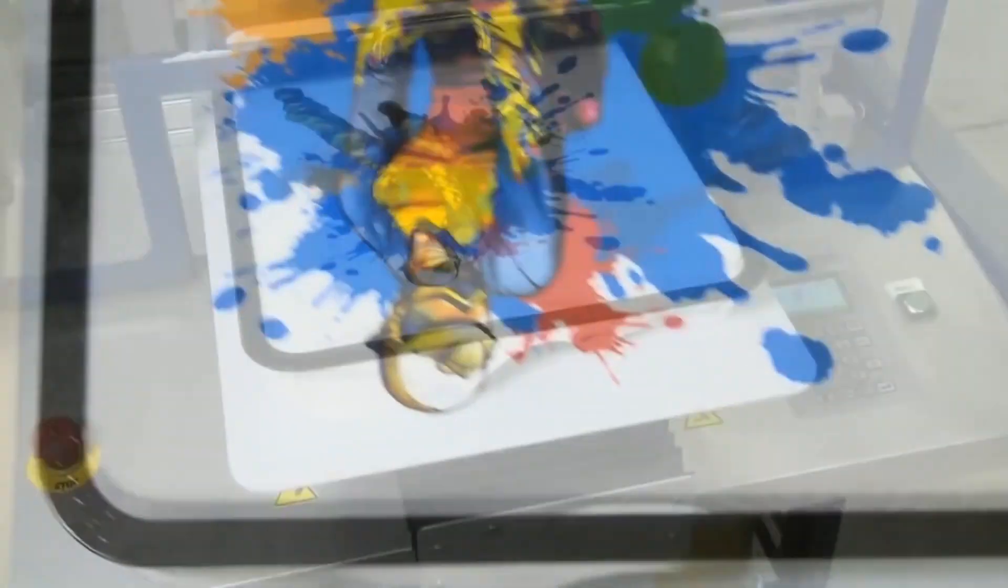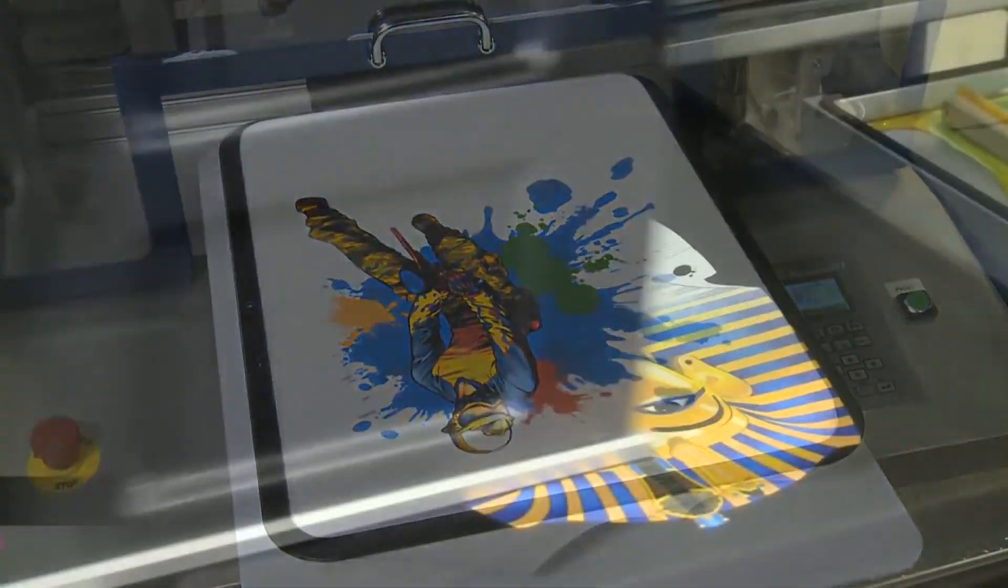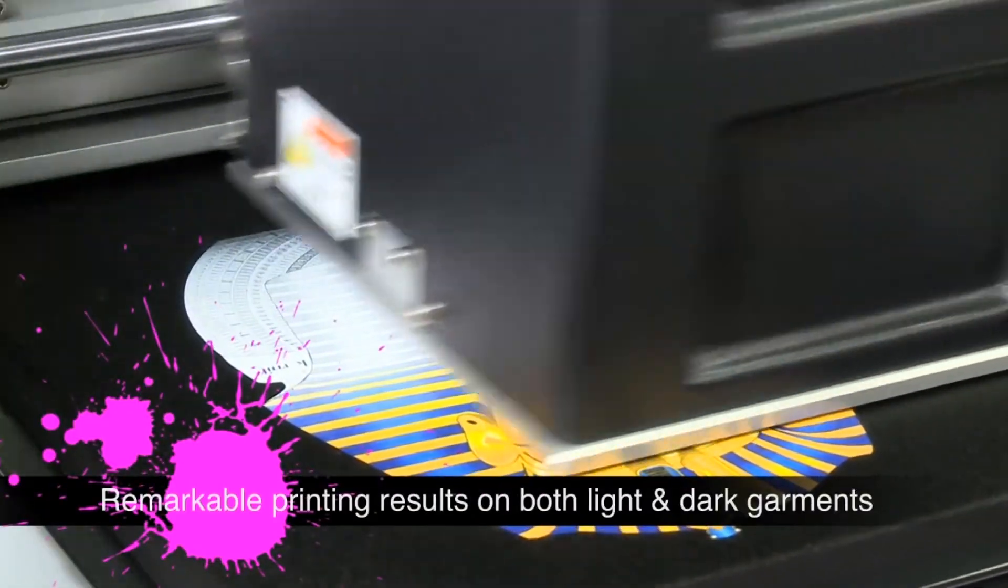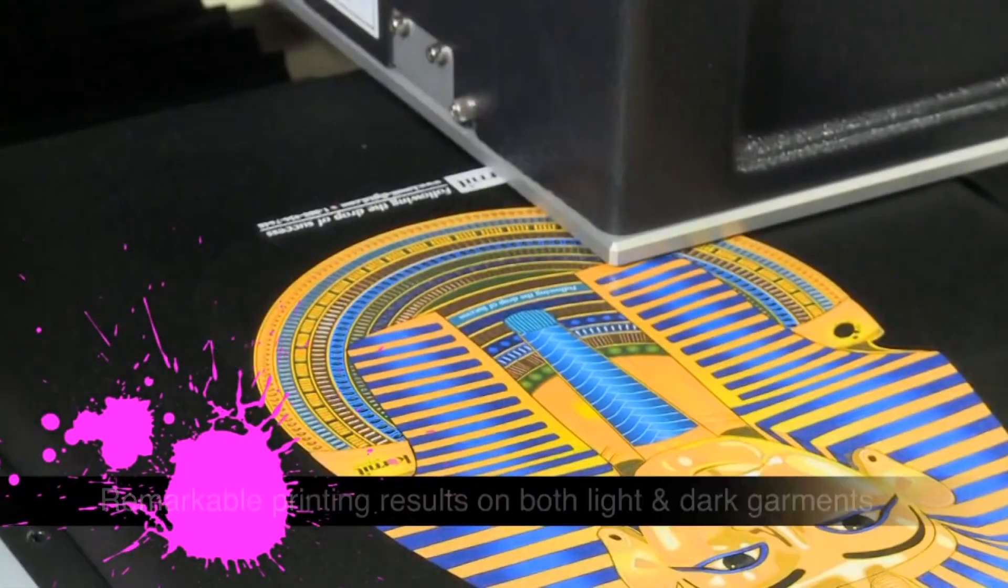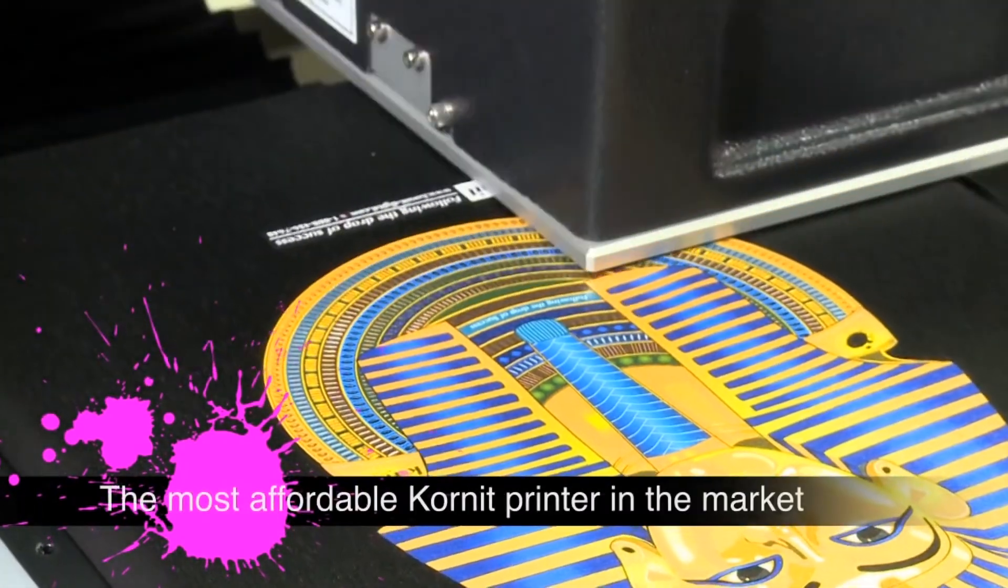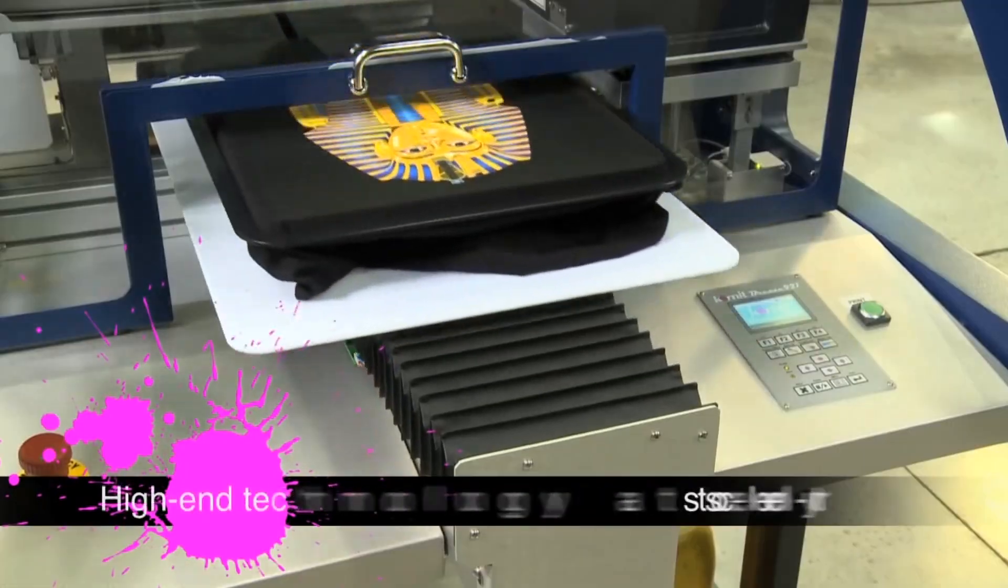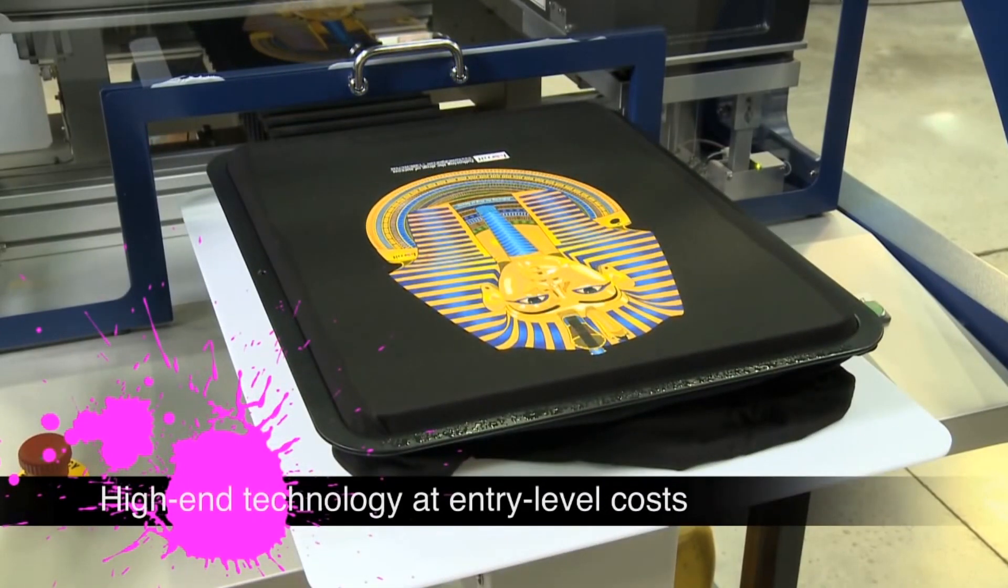Whether you're just entering the digital garment printing market or looking to expand, the Breeze direct-on-garment printer is the most affordable Cornete printer in the marketplace, delivering high-end technology at entry-level costs.